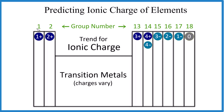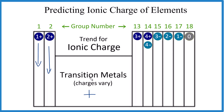Group 1 — all of these form ions with a 1+ ionic charge. Group 2 — all these are 2+. We skip the transition metals; they will always be positive, but we really have to look at what they're bonded to to figure out their ionic charge. Group 13 is 3+.